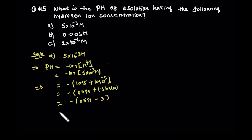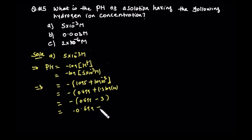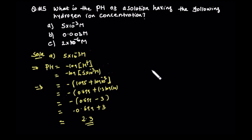So here we go to 0.699, okay, plus 3, then 2.300. So that's the pH — 2.300.